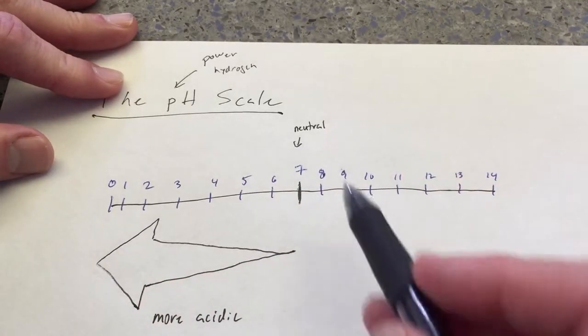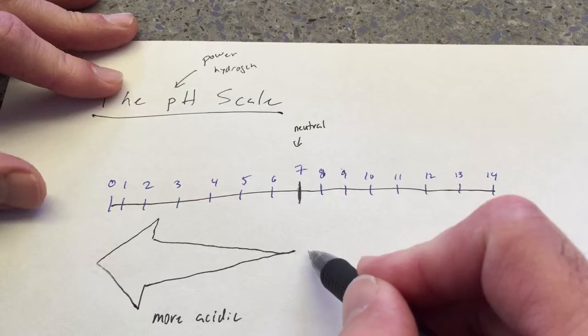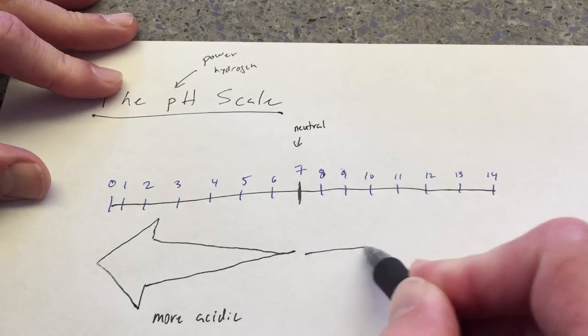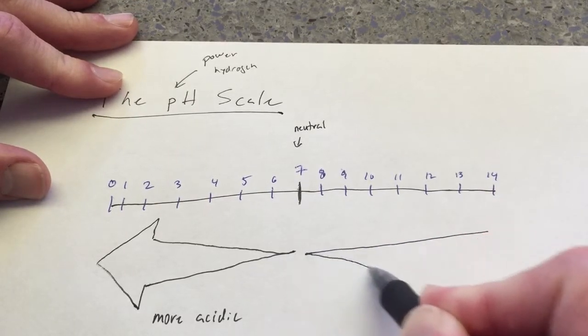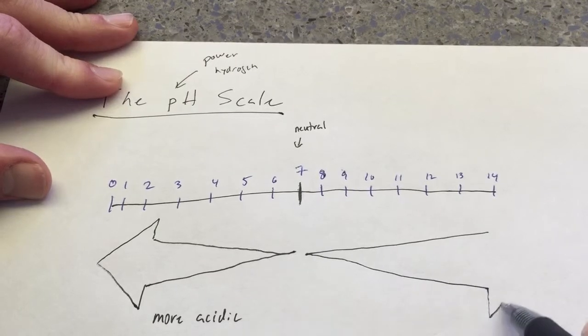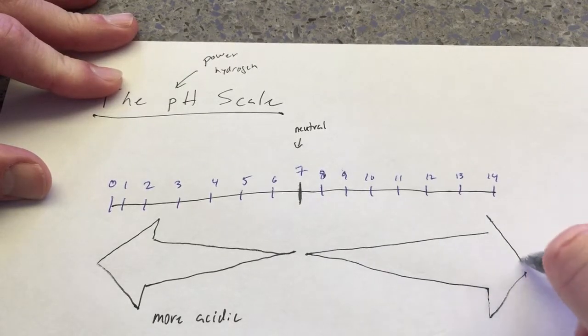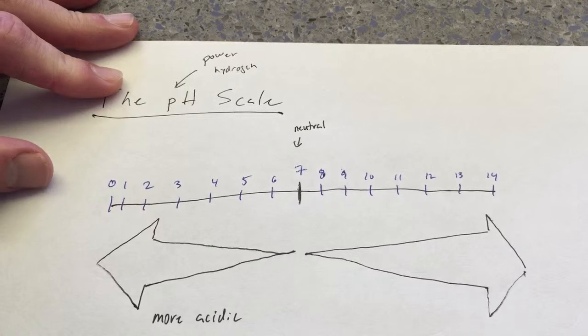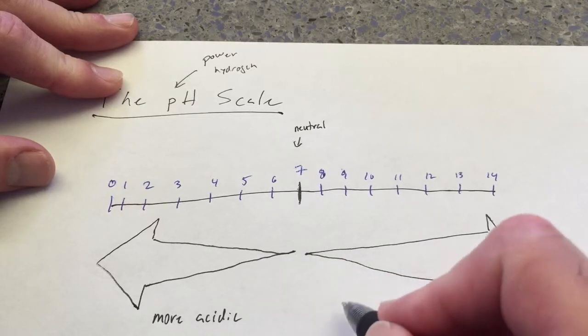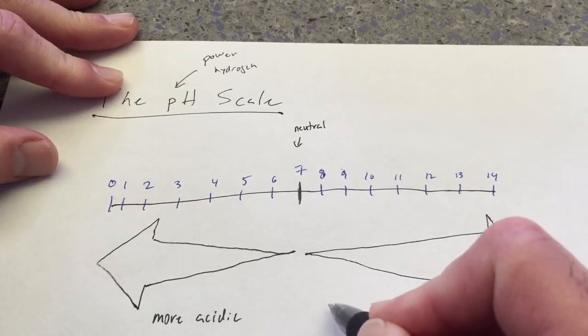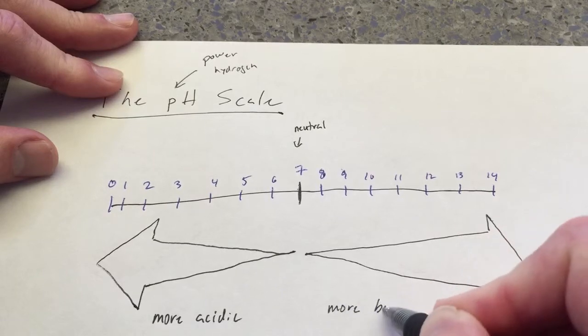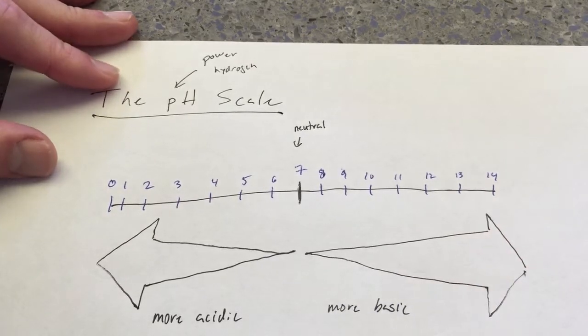Now from 7 to 14, we can draw another arrow. Now this arrow from 7 to 14 indicates solutions which are more basic.